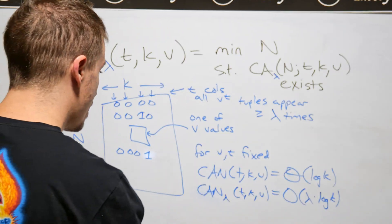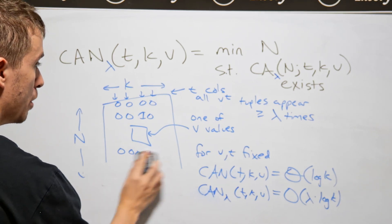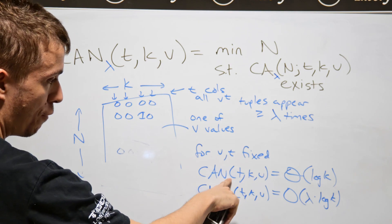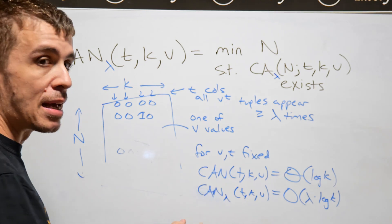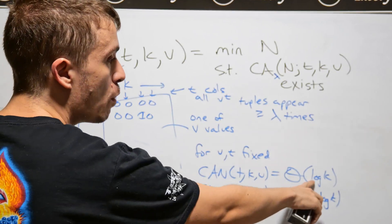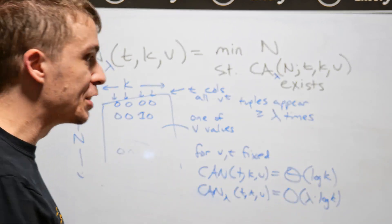And what's the reason for that? Well, what we can do is use the result that we figured out last time. The fact that if we have a covering array of so-called index one, where everything appears at least once, then we can use log k rows to make such a thing.